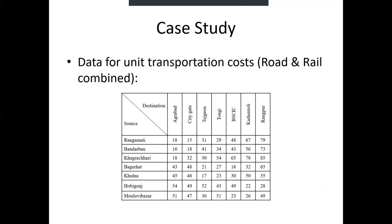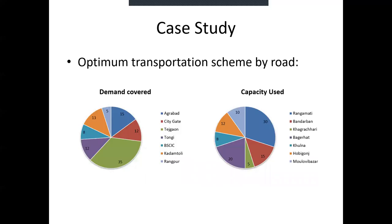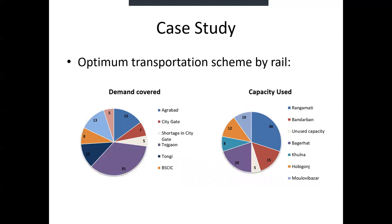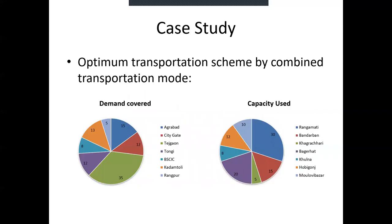After solving, the optimum scheme for road transportation is shown here. As we can see, all the capacity of sources are used and all the demands from destinations are fulfilled. Then, for the optimum transportation scheme for the rail route — as mentioned, there is no rail route for Khagrachori — some capacity is unused, which results in a shortage at the destination called City Gate. Then, for the combined transportation model, all capacity is used and all demands are fulfilled.